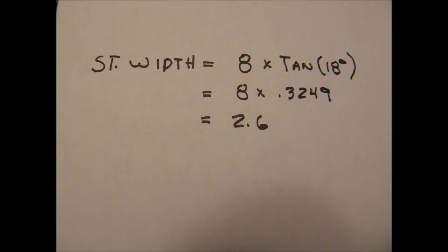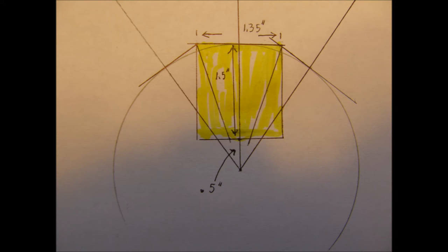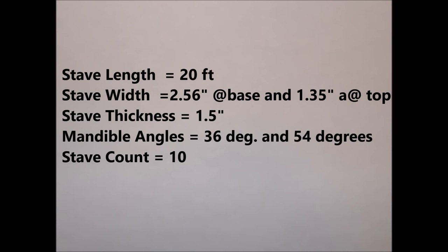The graphic solution for the top of the flagpole is shown here. Note that the opening at the top is 0.5 inches — or 1-inch diameter — which meets the 3/4-inch requirement. In summary, the stave dimensions for the flagpole are: length 20 feet, stave width 2.56 inches at the base tapering to 1.35 inches at the top, stave thickness 1.5 inches throughout, mandible angles of 36 degrees and 54 degrees, and a stave count of 10.